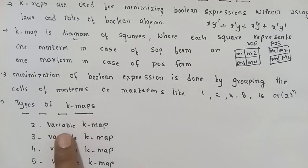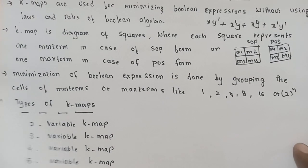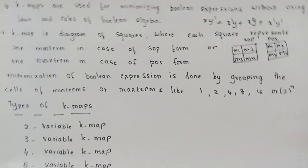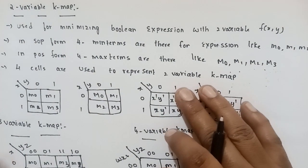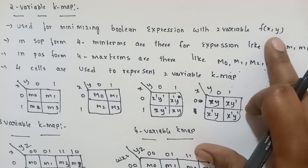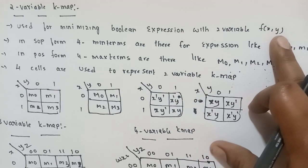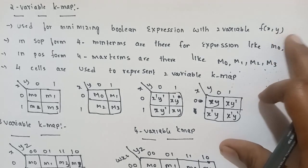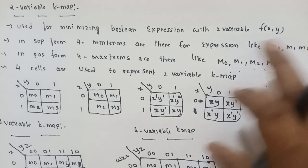Types of K-map: 2-variable K-map, 3-variable K-map, 4-variable K-map, and 5-variable K-map. A 2-variable K-map is used for minimizing Boolean expressions with 2 variables — for example, variables x and y, with expressions like xy plus xy' plus x'y.